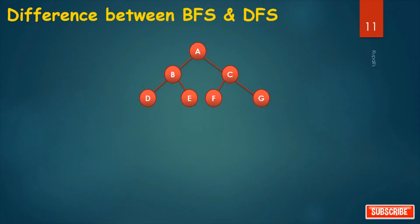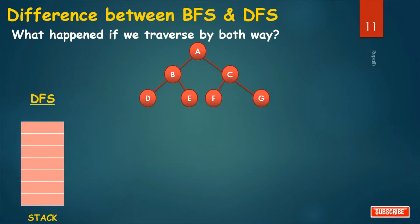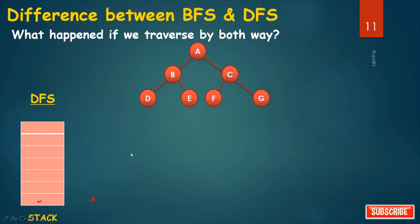Why is it called breadth first search and depth first search? Consider this tree example. First, traversing in DFS fashion requires a stack. Start from the root. Push A into the stack. When I pop A, check the connected nodes: B and C — both have status 1, so push B and C. When I pop C and print C, check the connected nodes: F and G — both have status 1, so push F and G.